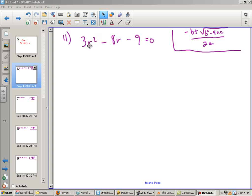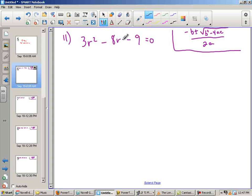Our goal is to find the values of R that make this equation equal to 0. It's in standard form, so I'm ready to go. I noticed that my A is equal to 3, my B is equal to negative 8, and my C is equal to negative 9. I'm at number 11, by the way.